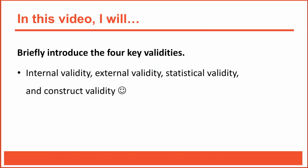In the last video, I mentioned that this is an important chapter because it introduces a framework for evaluating all research based on three key types of research claims and four key types of validities. In this video, I'll briefly introduce each of the four key validities: internal validity, external validity, statistical validity, and construct validity. I'll create separate videos to explore each in more detail, but for now I thought it would be beneficial to quickly introduce all four. All right, let's get to work.